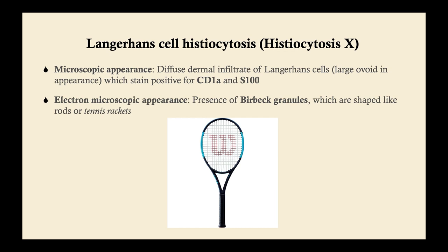On the USMLE, likely for Step 1, they'll probably stain for CD1A and tell you that. You'll see cells staining positive for CD1A — Langerhans cell is the only thing that's going to do that on the exam. Remember both CD1A and S100, but particularly CD1A, because S100 can be seen in other conditions.